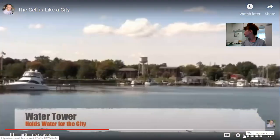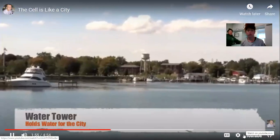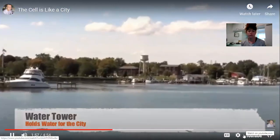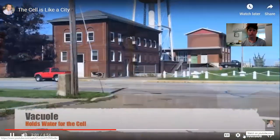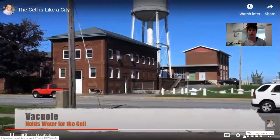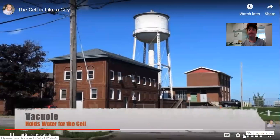The water tower holds water for the city of Dunkirk. The vacuole holds water inside of a cell just like the water tower - it saves it for a time when the cell needs water.